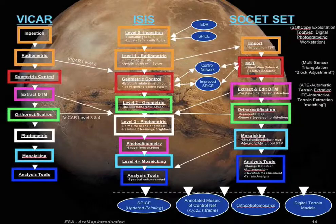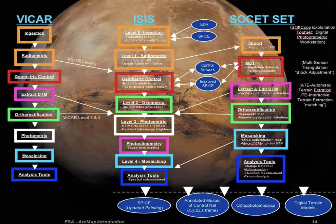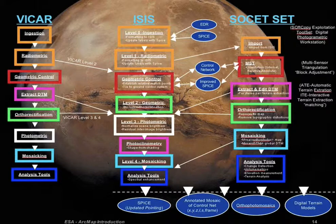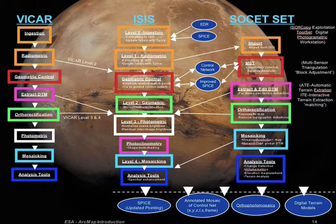Just to give a sense of how complicated this is — these are the workflows from VICAR and ISIS, and we also use SOCET SET for topography. You can see how complicated this can be for an individual scientist or student trying to understand how to get to a GIS. You'll notice level zero, level one, geometric control, level two, more geometric control, level three, photometry and photoclinometry, level four mosaicking — that's when you actually get to where most people are dealing with GIS. Not until the light blue or dark blue boxes does GIS come into play. We can't just take data; we have to process it, control it, and calibrate it before bringing it into a GIS.